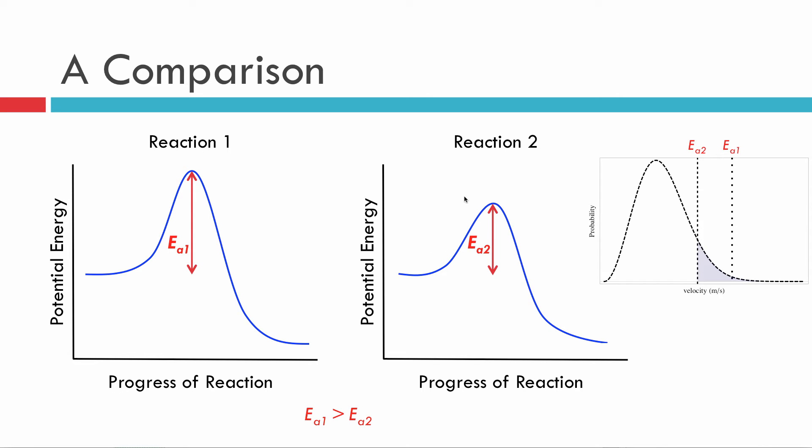All right, when we increase the temperature, we can go from cold to hot. We see that in either case we get more molecules, because the area under the curve represents the fraction of molecules going at a particular velocity.